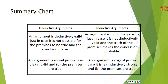Here's a summary chart on the difference between deduction and induction. An argument is deductively valid just in case it is not possible for the premises to be true and the conclusion false. An argument is inductively strong just in case it is not deductively valid and the truth of the premises makes the conclusion probable. An argument is sound just in case it is valid and the premises are true. An argument is cogent just in case it is inductively strong and the premises are true.